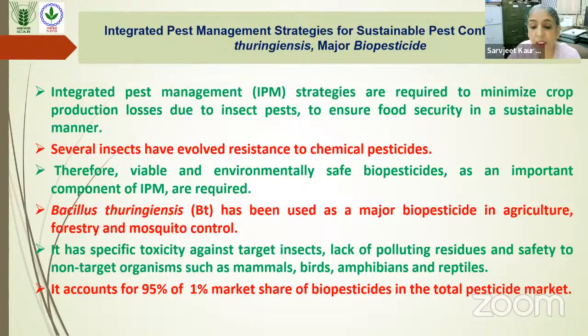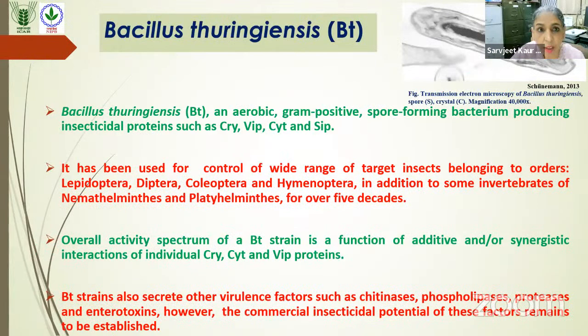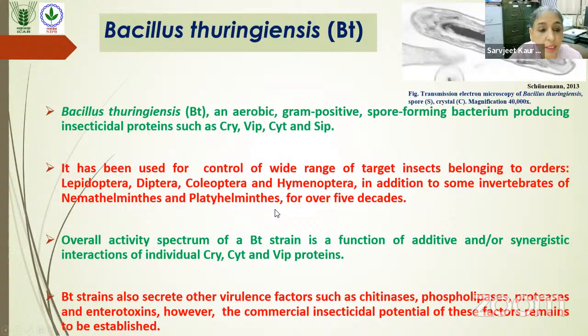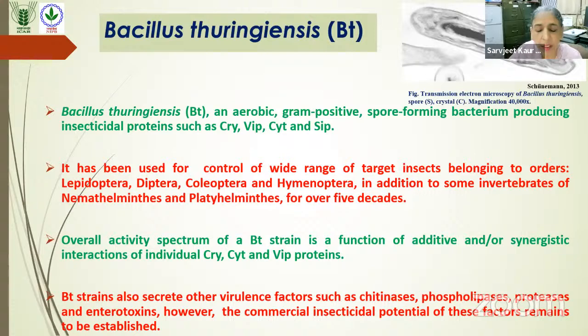The total biopesticide market is about 1% of the total pesticide market, and of these, 95% are of the Bt type. Bt is an aerobic, Gram-positive, spore-forming bacterium which produces insecticidal proteins of different kinds, called cry proteins. It has been used for control of a wide range of target insects belonging to several insect orders, and the overall spectrum of activity of a Bt strain is the sum total of additive or synergistic interactions of all the different insecticidal proteins it produces.